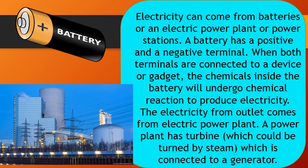Electricity can also come from batteries or an electric power plant or power stations. A battery has a positive and a negative terminal. When both terminals are connected to a device or gadget, the chemicals inside the battery will undergo chemical reaction to produce electricity. The electricity from an outlet comes from electric power plants. A power plant has turbines which could be turned by steam, which is connected to a generator. The generators produce electricity which travels through electrical cables into our homes.